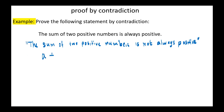This means A plus B is less than 0. If we subtract B from both sides, we have A less than minus B. Since A and B are both positive, this means A is also negative, which contradicts the supposition that there exist two positive numbers A and B that sum to a negative number. Hence our original proposition is true — the sum of two positive numbers is always positive, hence proved.